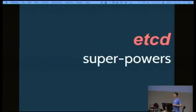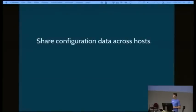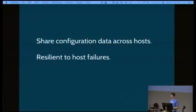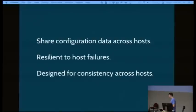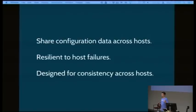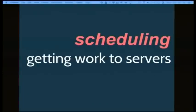Essentially what we've done is made the individual server less critical, because this critical data is now replicated over multiple hosts. The idea is to share configuration data, be resilient to host failures, and be designed for consistency across hosts. By 'consistency' I mean you're able to take semaphores or mutexes across the network — because of how the underlying consensus protocol works, you're able to implement things like a semaphore across multiple hosts. For important things like doing a leader election for a database or a scheduler, you need this primitive of doing an atomic mutex across hosts.